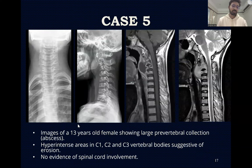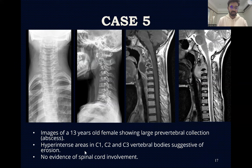Case five: Images of a 13-year-old female showing a large pre-vertebral collection, likely an abscess. Hyperintense areas are seen on STIR sequence at the C3 vertebral body with signal changes. No involvement of the spinal cord was noted, with sparing of the spinal cord demonstrated.